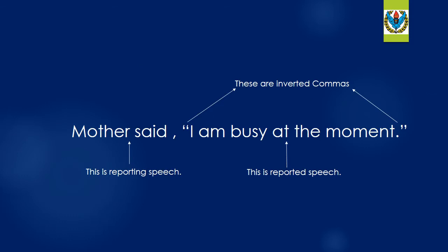A direct speech has two parts. One part is inside the inverted commas — we call them inverted commas or quotation marks. The words written within the inverted commas are called reported speech. The other part, which is outside these inverted commas and separated by a comma, is called reporting speech. So a direct sentence has two parts: reporting speech separated by a comma, then reported speech under the quotation marks.